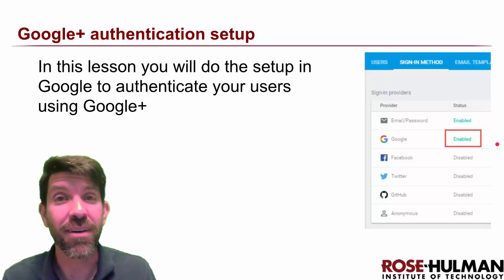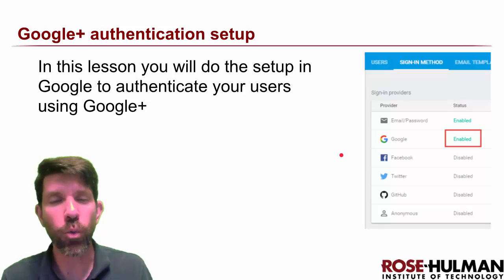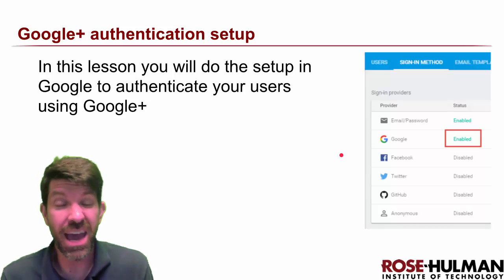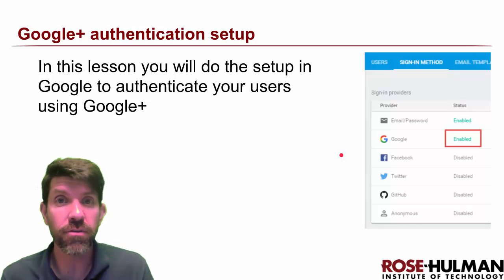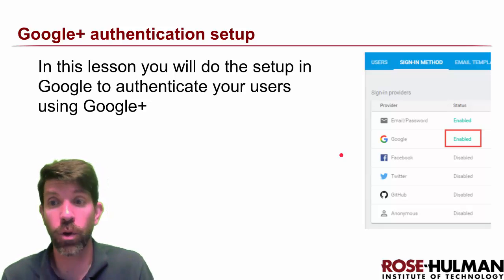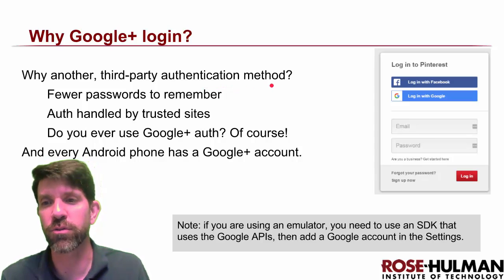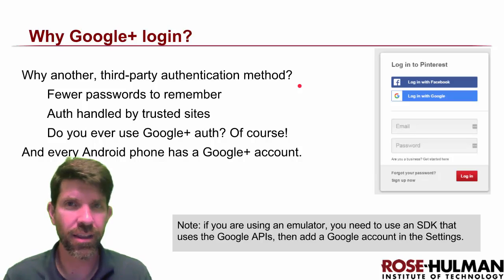Back for another round of authentication, this time using Google. You might wonder why — we already have authentication done; we can create users with email and passwords and they each have access only to their own stuff. Why do we care? This is yet another third-party authentication. Why do we have to go through this route?